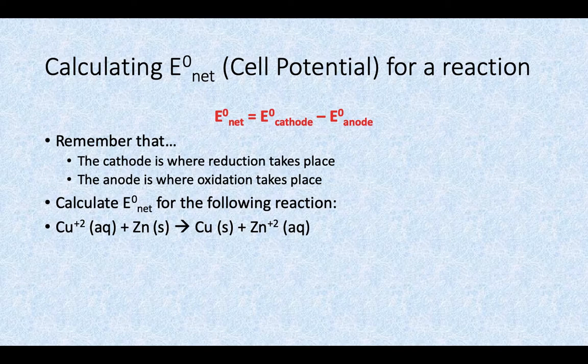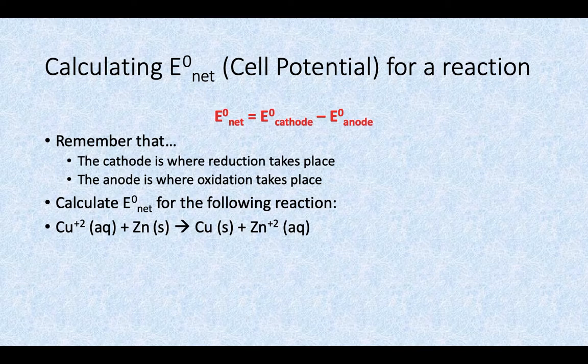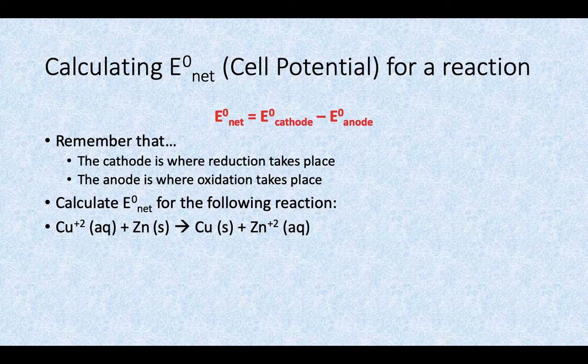Just a little reminder, cathode is where the reduction takes place, the part of the reaction where you're gaining electrons, and the anode is where oxidation takes place. Which chemical is the one losing the electrons?